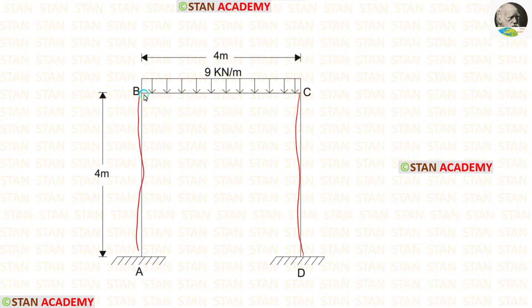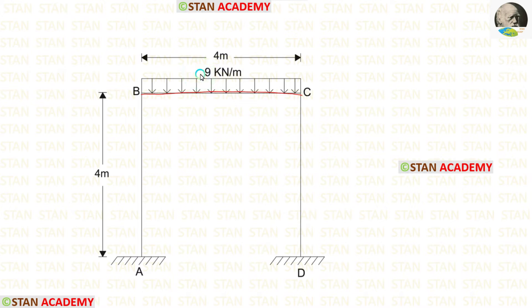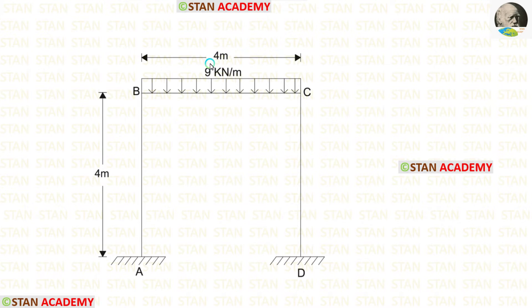Also there is a beam BC. In the columns, there are no loads. In the beam BC, there is a uniformly distributed load of 9 kN per meter, acting for the full span. The height of the columns is 4 meters and the length of the beam is also 4 meters. This frame is a non-sway type frame because we have symmetrical loading and symmetrical dimensions.